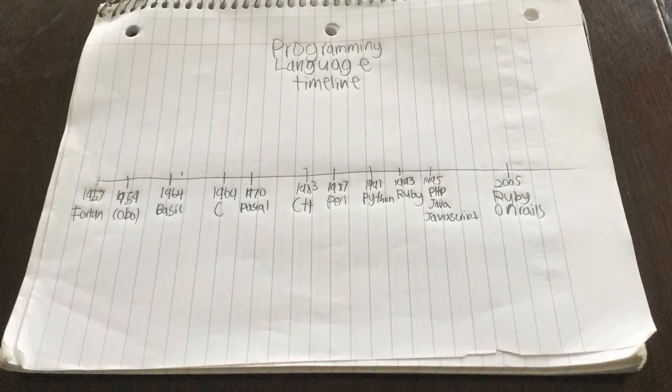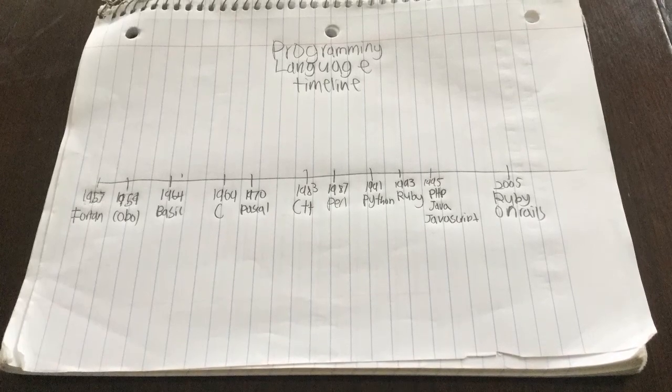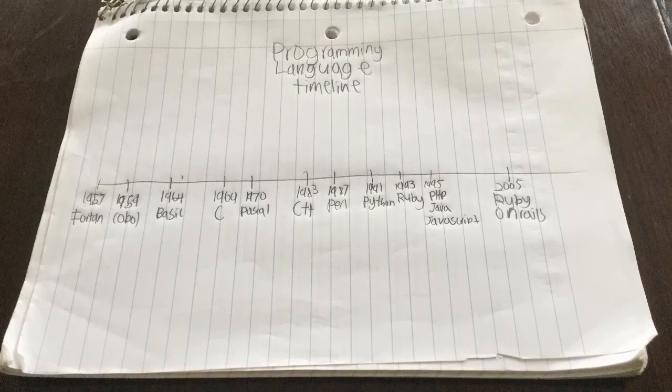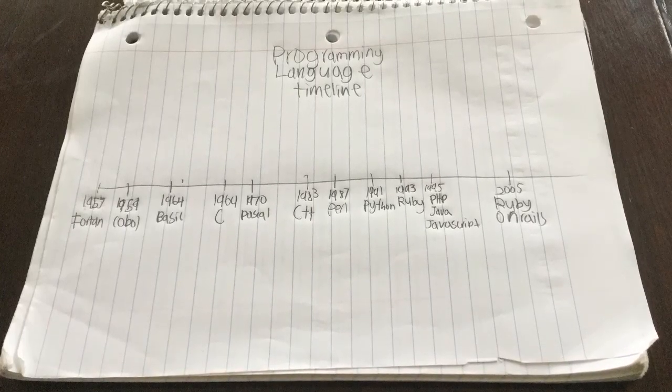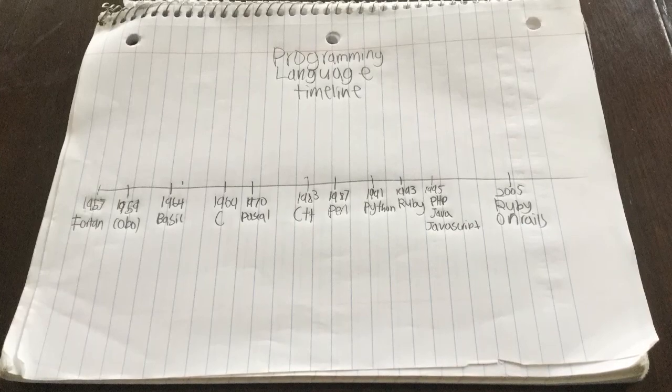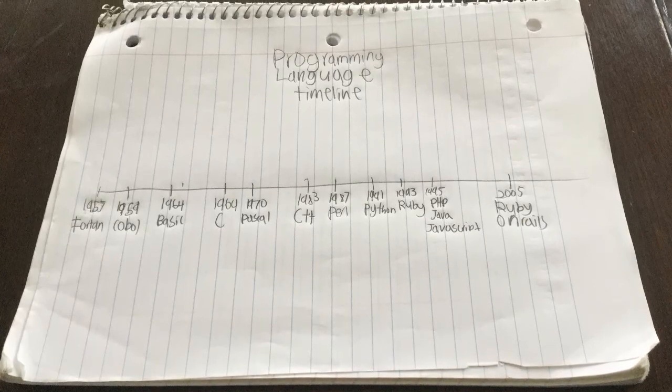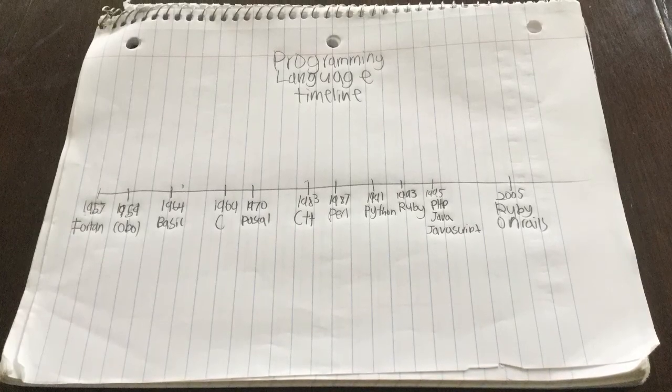In 1995, PHP, Java, and JavaScript were created. And in 2005, Ruby on Rails was created.